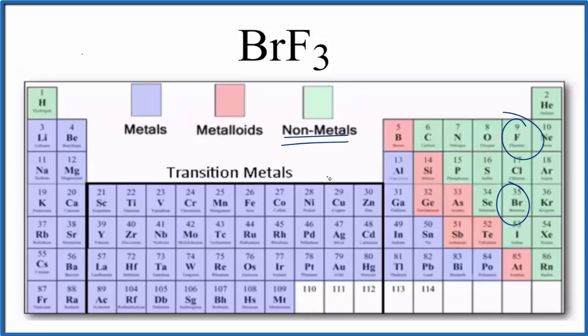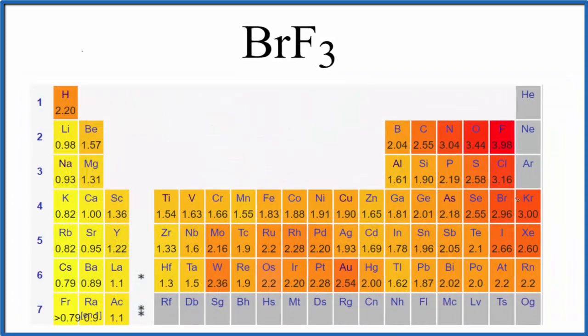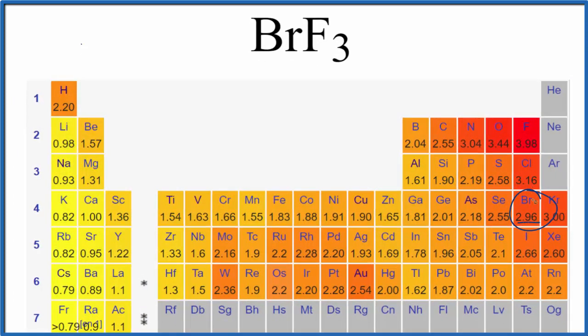But let's take a look at the electronegativity just to be sure. So here's bromine, that's 2.96, and fluorine, 3.98. So 3.98 minus 2.96, that's 1.02. That's the difference in electronegativity between bromine and fluorine.